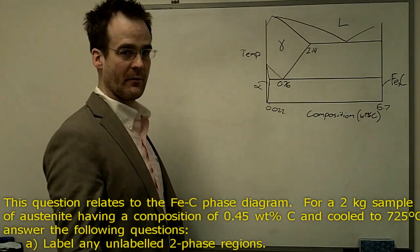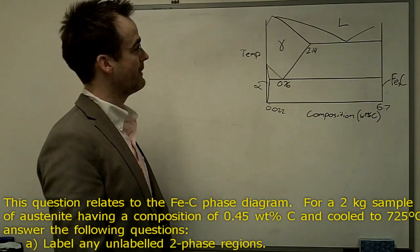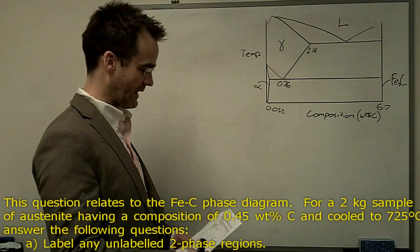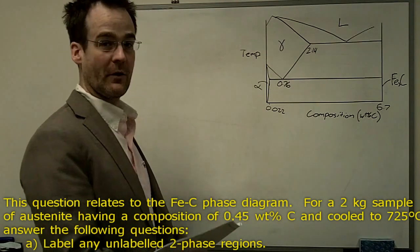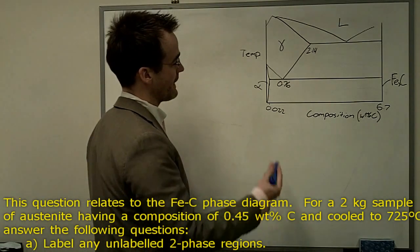This is another iron carbon phase diagram question, our good old friend, the iron carbon phase diagram. The first part of the question says, label any unlabeled two-phase fields. So that's a good way to start things off. Let's just go ahead and do that.